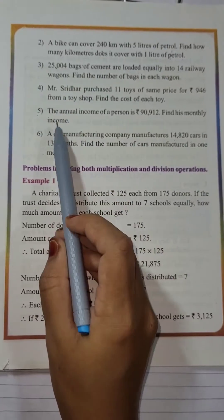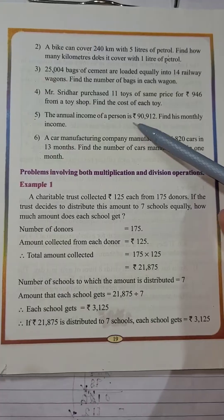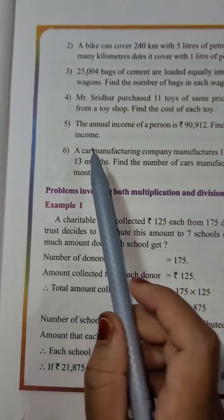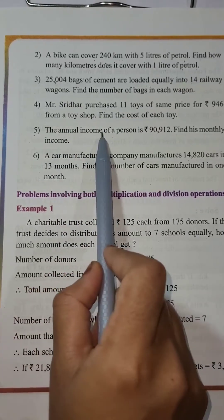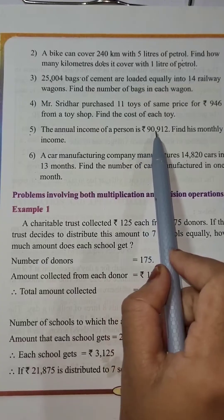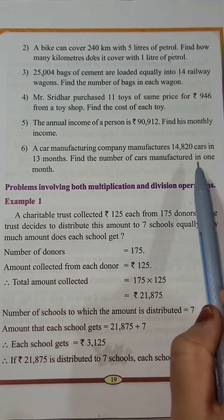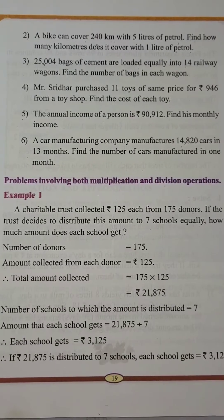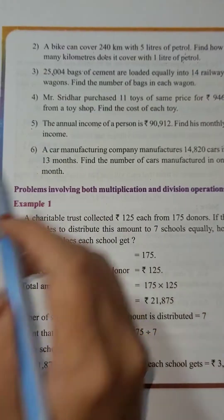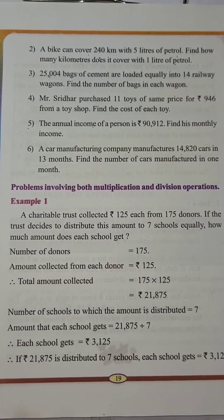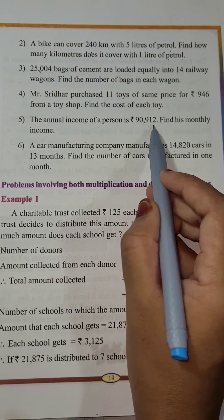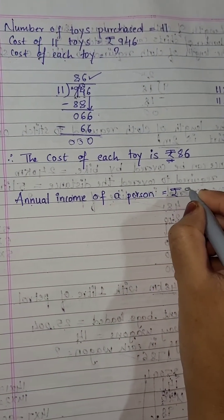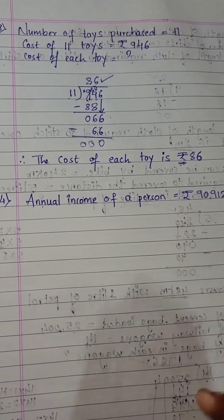The fifth problem: the annual income of a person is rupees 90,912. Find his monthly income. Annual means yearly income. So a person earns 90,912 annually and you have to find out his monthly income. Let's write the particulars. First sentence: annual income of a person is equal to rupees 90,912.